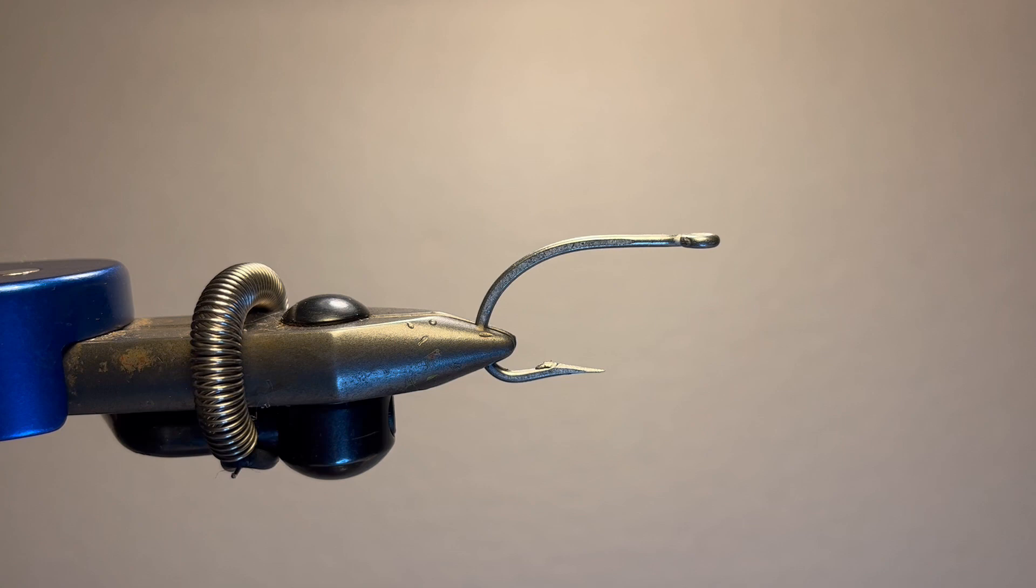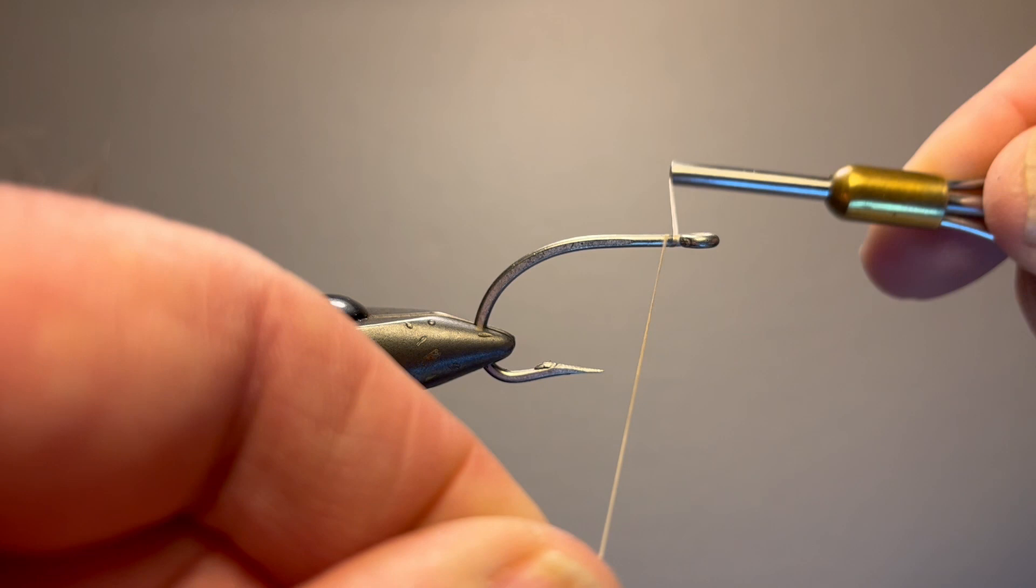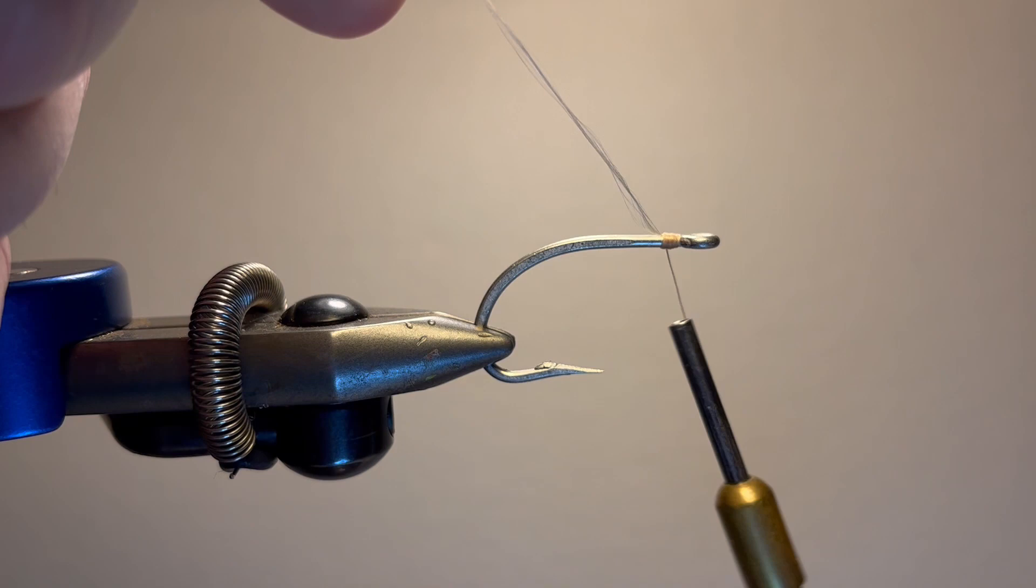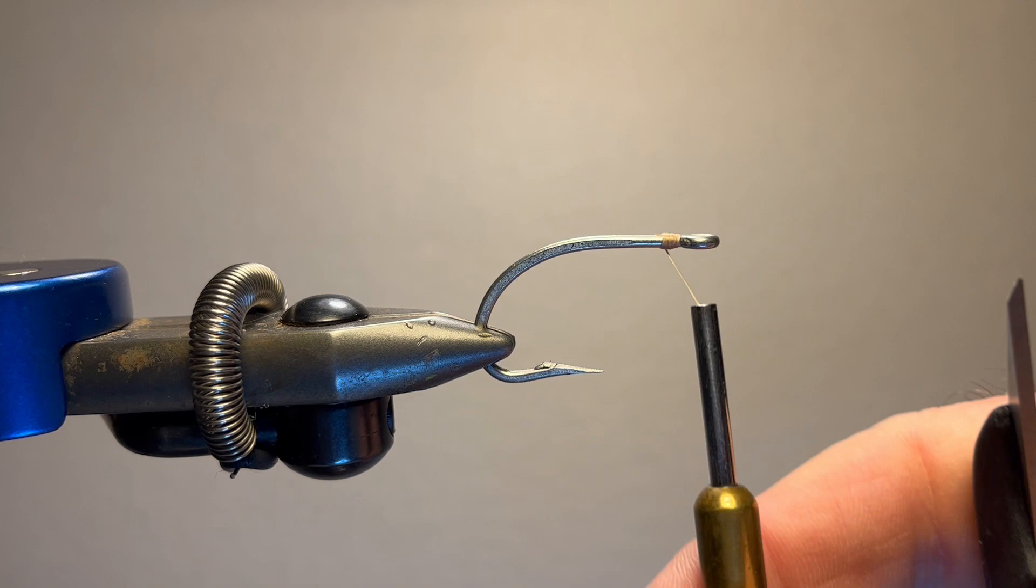So I'm going to start. I'm going to build a little thread base right here. This is a simple fly that catches fish. It actually comes from the West Coast. This was a fly by Dan Blayton, I believe his name is. He came up with it and he ties it a little bit different.